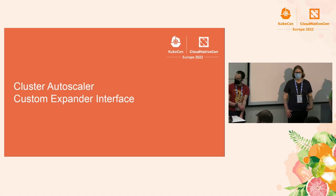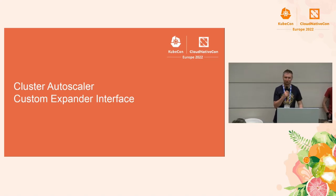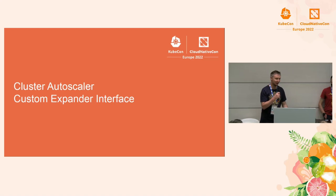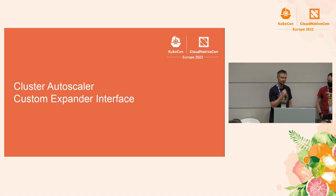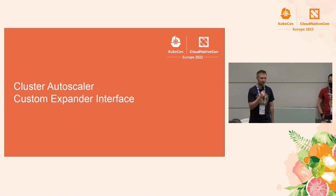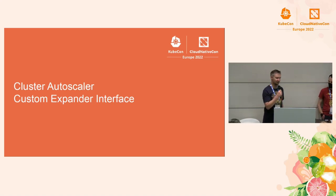I'm David Morrison, a staff software engineer at Airbnb. I work on the compute infrastructure team — specifically, I do a lot with scheduling, autoscaling, and cluster efficiency for all of our Kubernetes clusters. Today I want to talk about the custom expander interface that we contributed to cluster autoscaler. A bunch of this work was actually done by my colleague Evan Sheng, who unfortunately wasn't able to be here, but it was a joint effort.